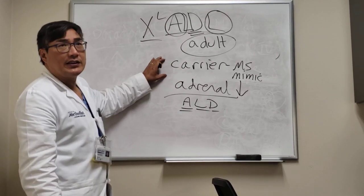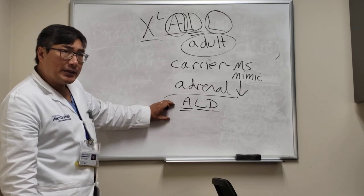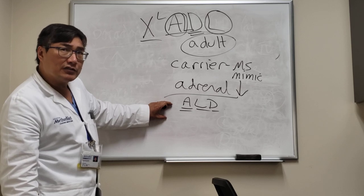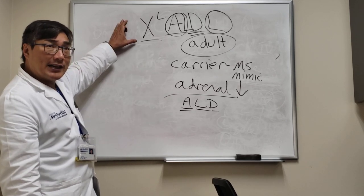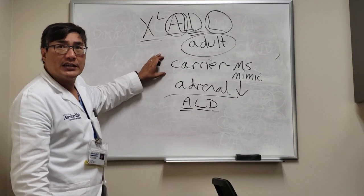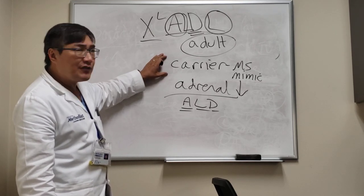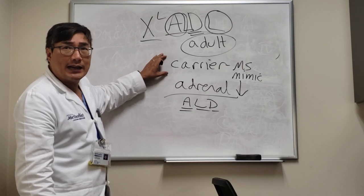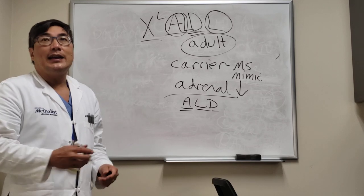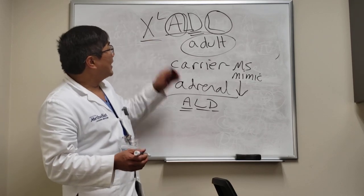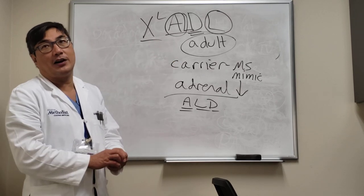The tip-off for a female carrier is a family history of adrenal dystrophy or leukodystrophy in a male son. About 50% of female carriers exhibit the phenotype, but it's significantly delayed because it's so mild. That's why you need to know about x-linked adrenoleukodystrophy even as an adult neuro-ophthalmologist.